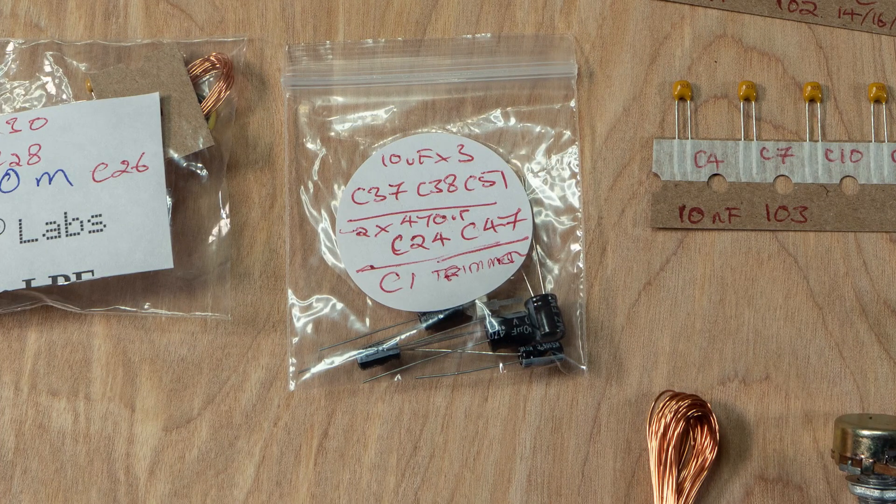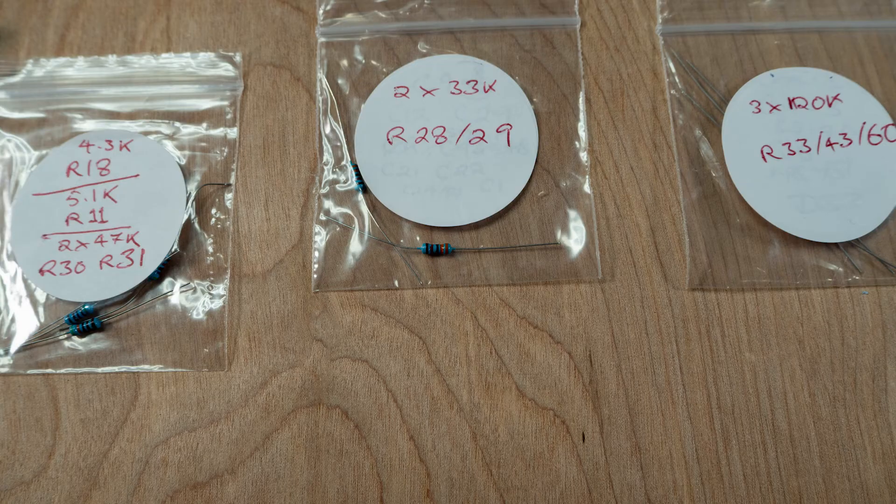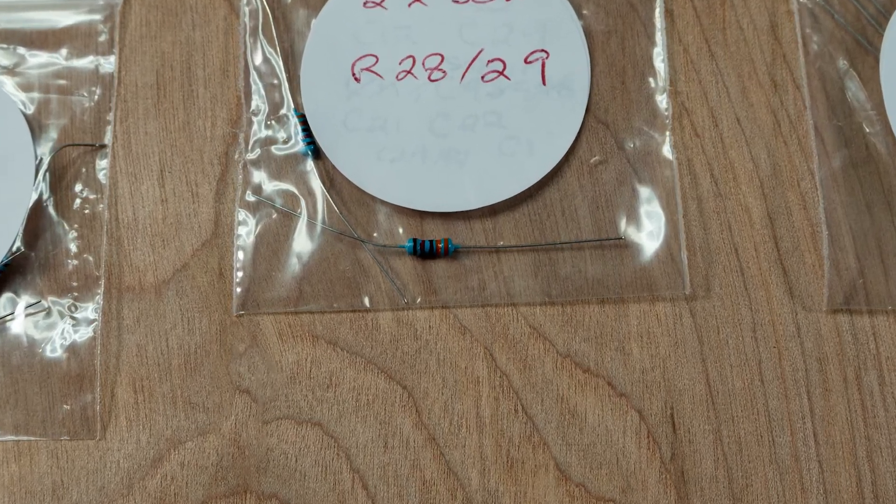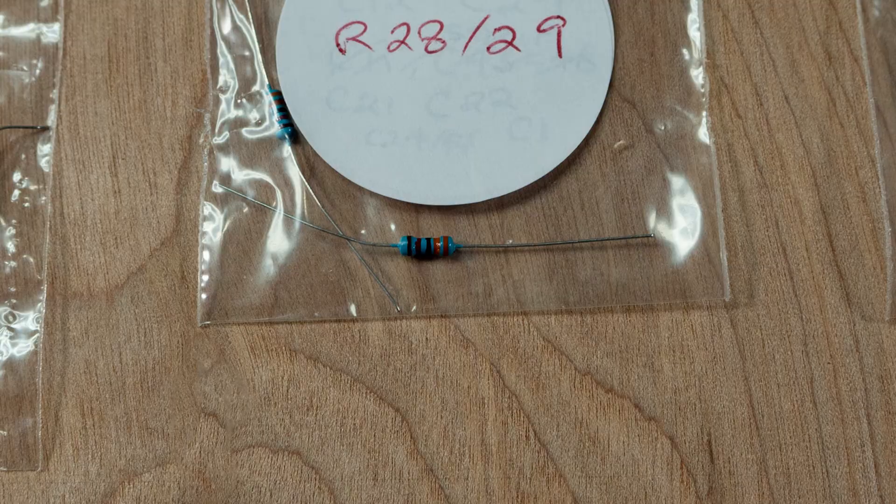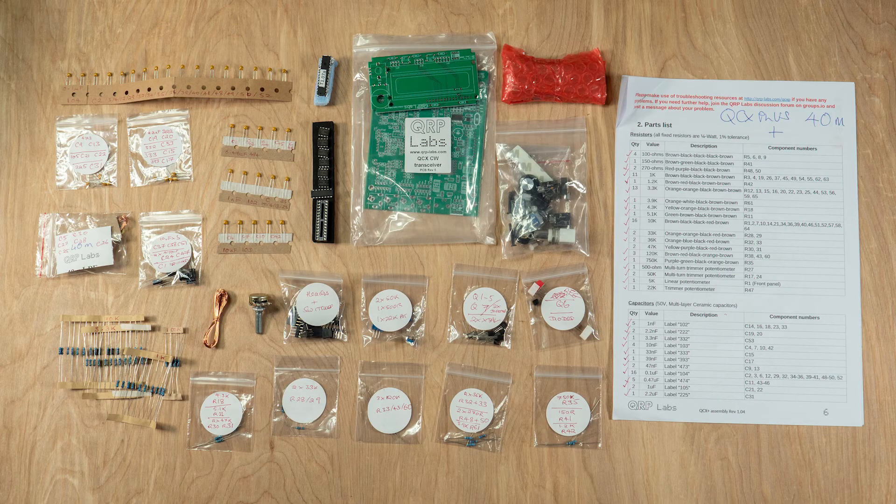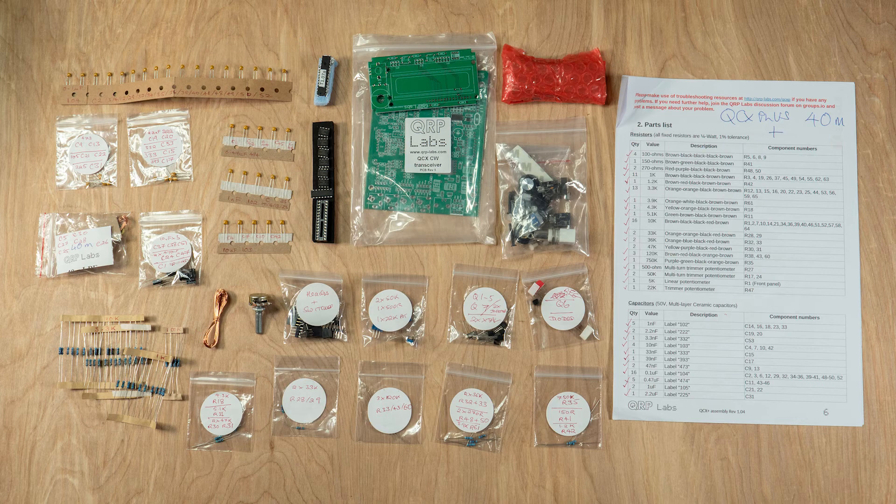It can be easy to make a mistake with metal film resistors, especially with the colored bands on a blue background, and it's so much quicker to have them ready and not to have to keep looking through a pile of components for each resistor or capacitor.